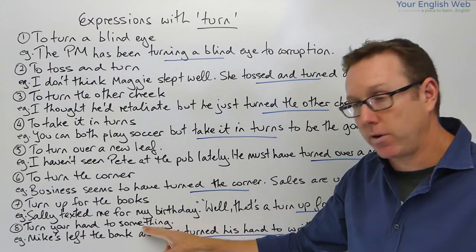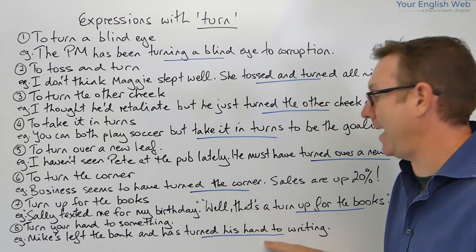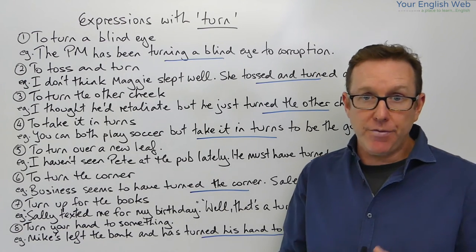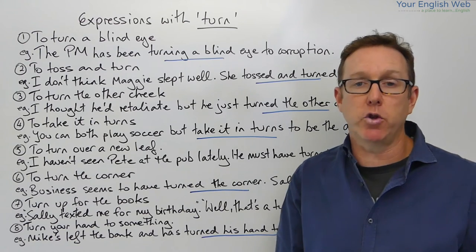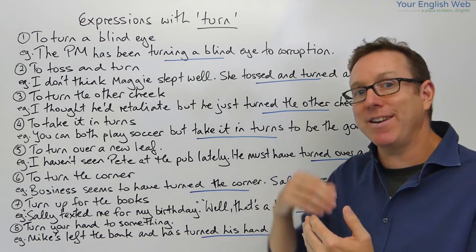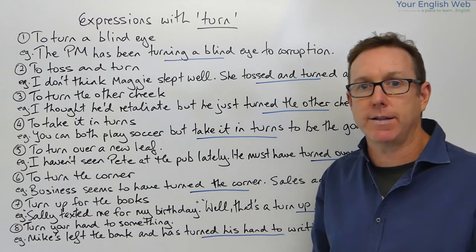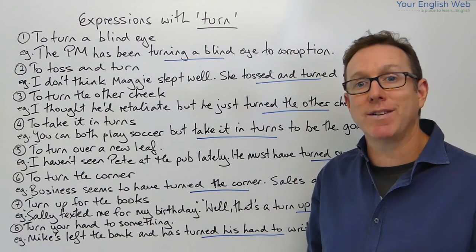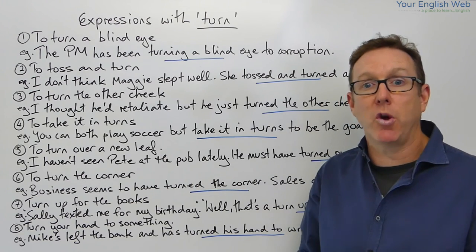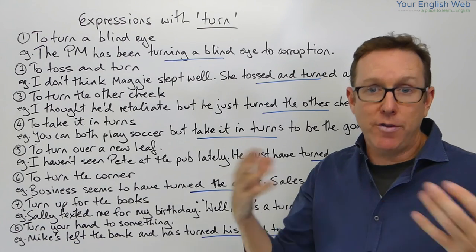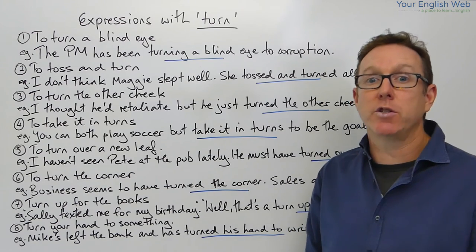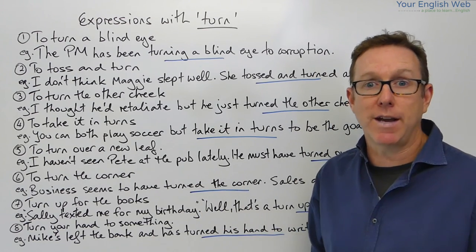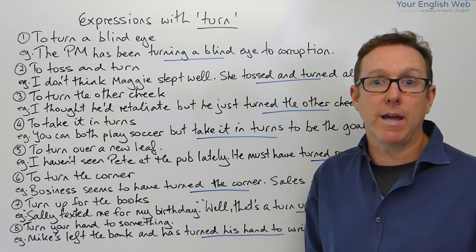The next one is to turn your hand to something. Mike's left the bank and he has turned his hand to writing. This means you change your profession to something that involves perhaps a little bit of skill or something different to what you were doing before. He was working in a bank and he's turned his hand to writing — he's a skillful writer. Sometimes famous people turn their hand to other things; remember Michael Jordan, who turned his hand to baseball after playing basketball.